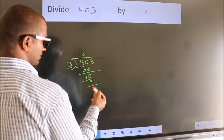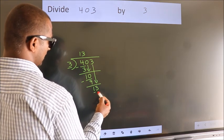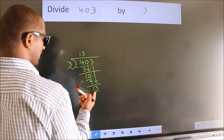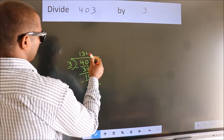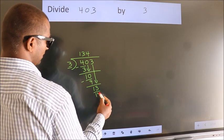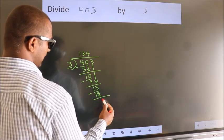After this, bring down the beside number. So, 3 down. So, 13. A number close to 13 in the 3 table is 3 fours, 12. Now we subtract and we get 1.